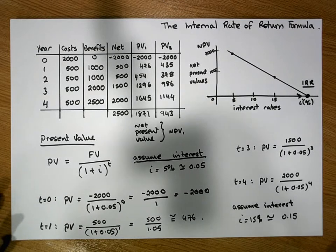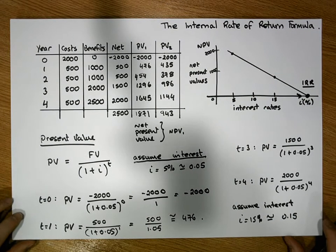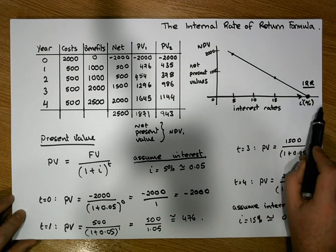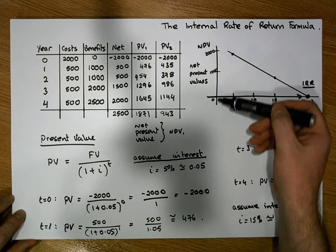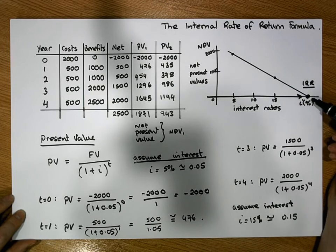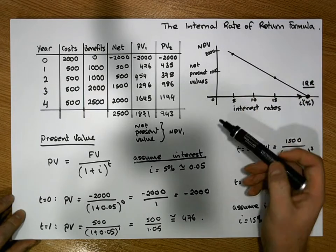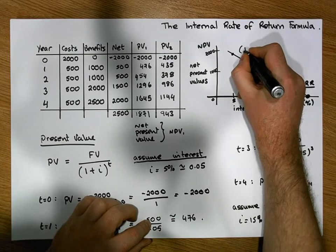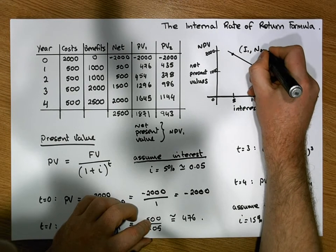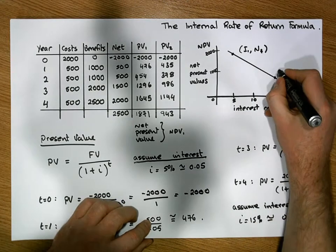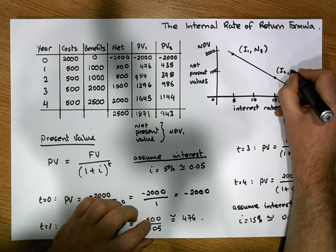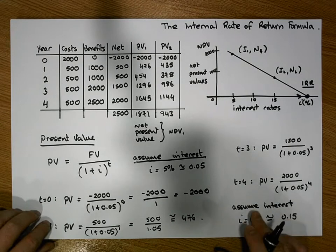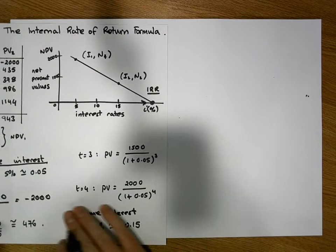Let's construct a formula for the internal rate of return. We have two points on a line, so we can calculate the equation of the line and solve for when the net present value (y-value) equals zero. This gives us a general formula for the IRR given two net present values and two interest rates. Let's call them i1, i2 for the interest rates and n1, n2 for the net present values.